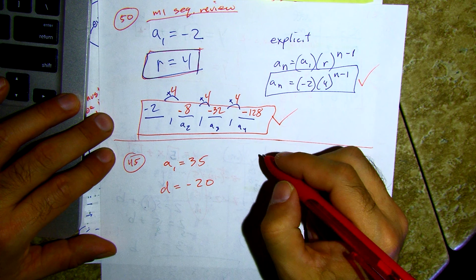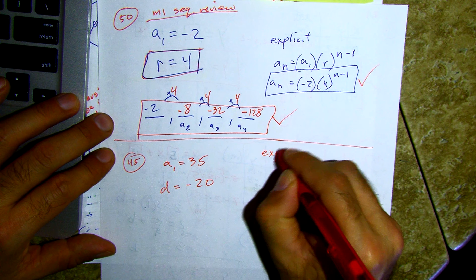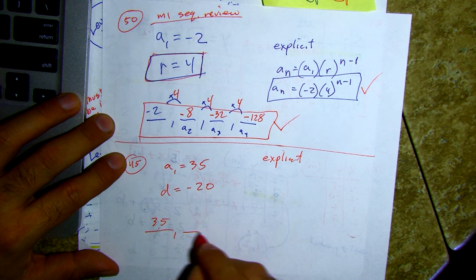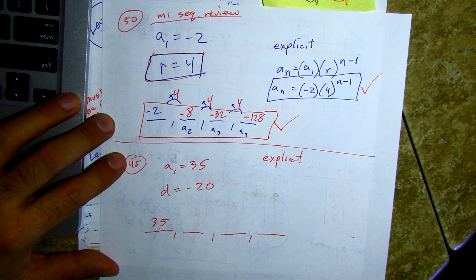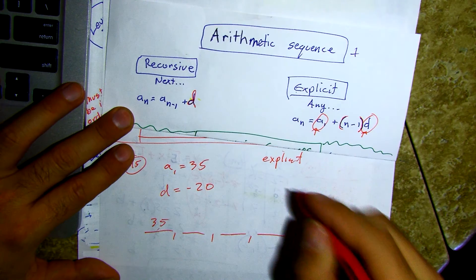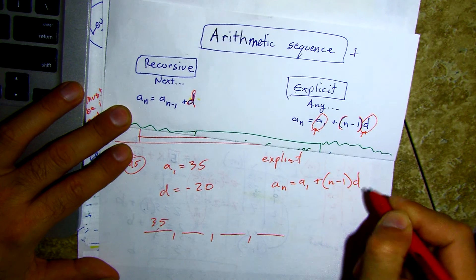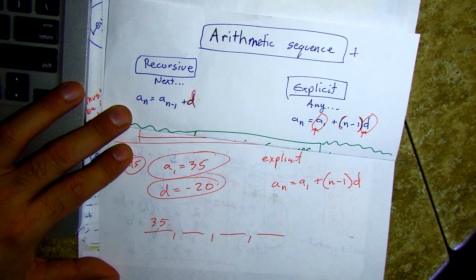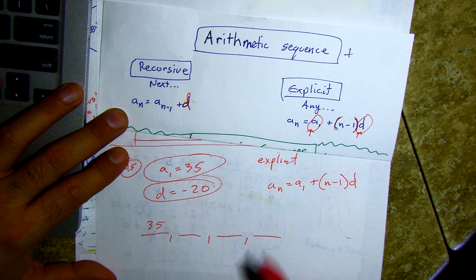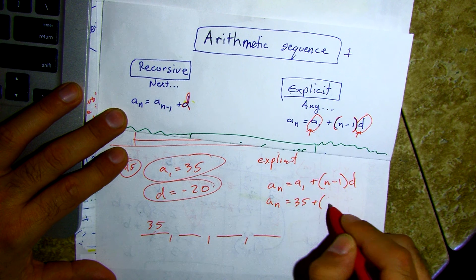For arithmetic sequences, the explicit formula is: a sub n equals a sub one plus n minus one times d. We know the values — how nice. My common difference is negative twenty. Setting it up: a sub n equals thirty-five plus n minus one times negative twenty. That gives a sub n equals thirty-five minus twenty n plus twenty, so a sub n equals negative twenty n plus fifty-five.